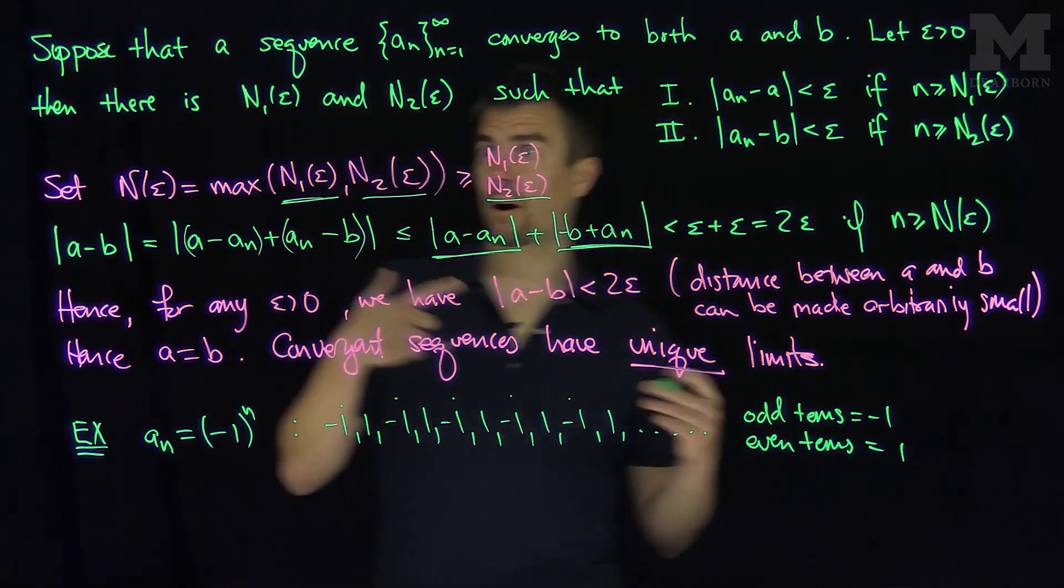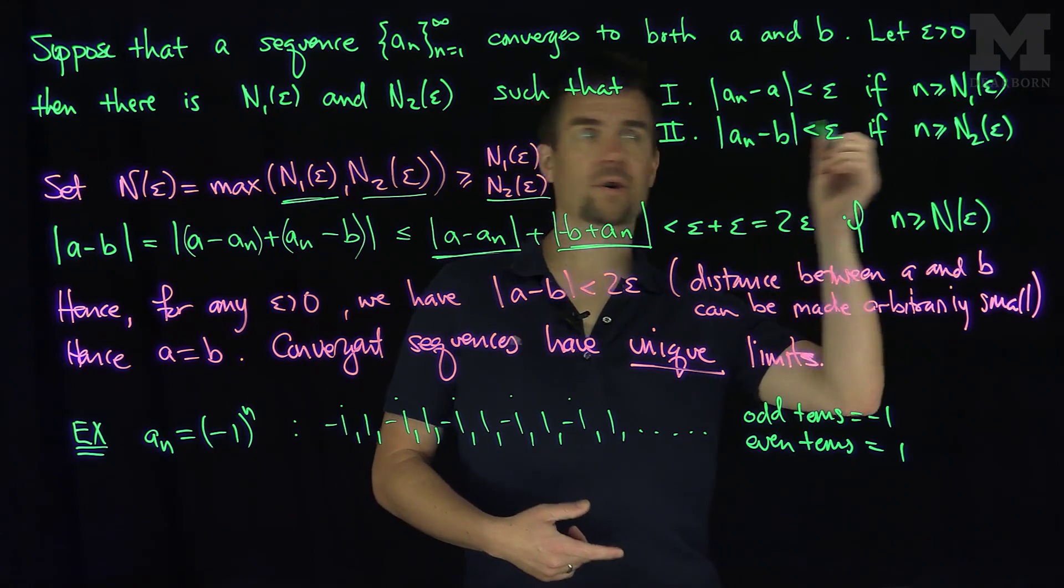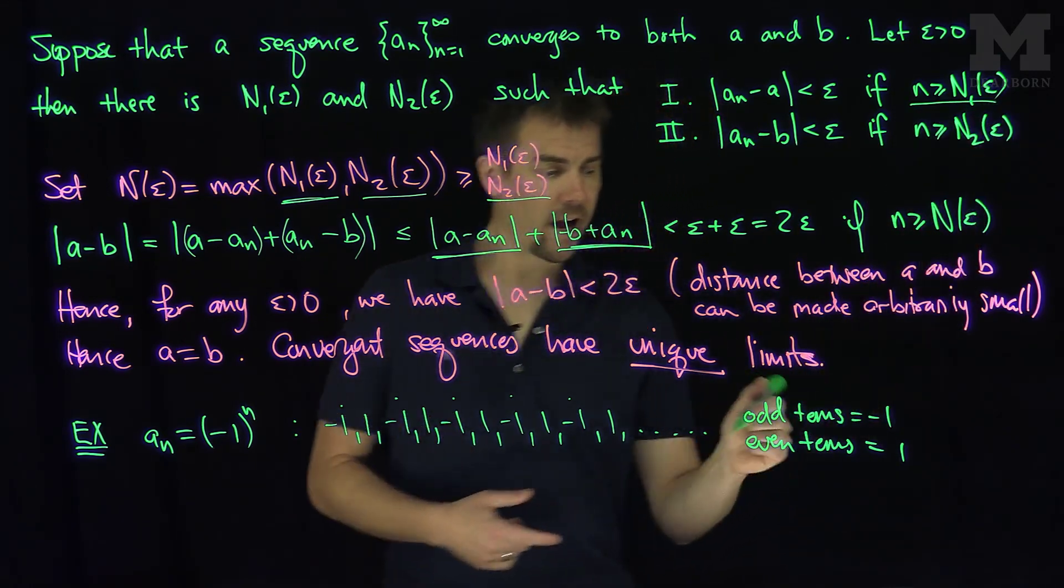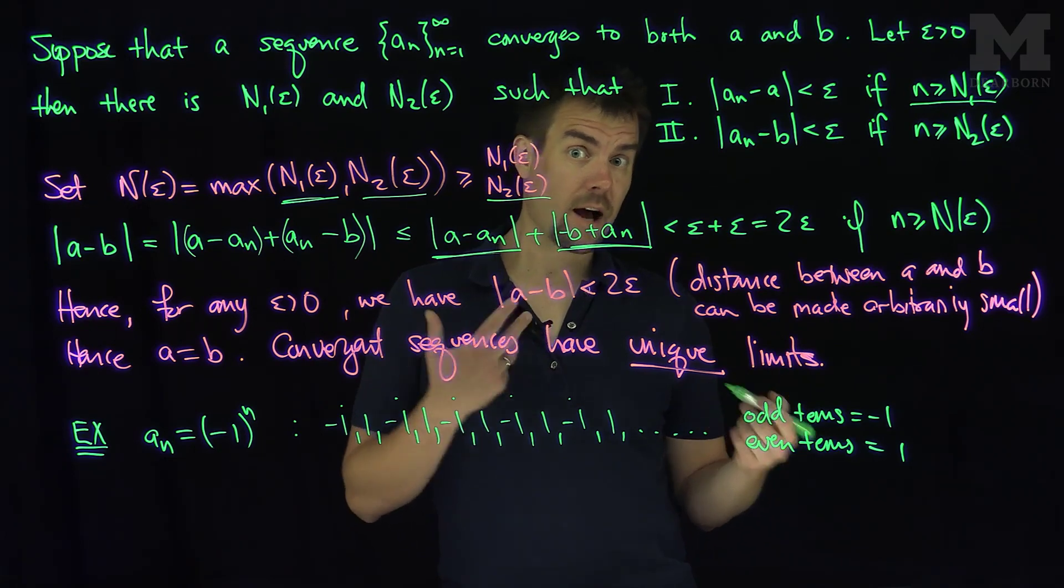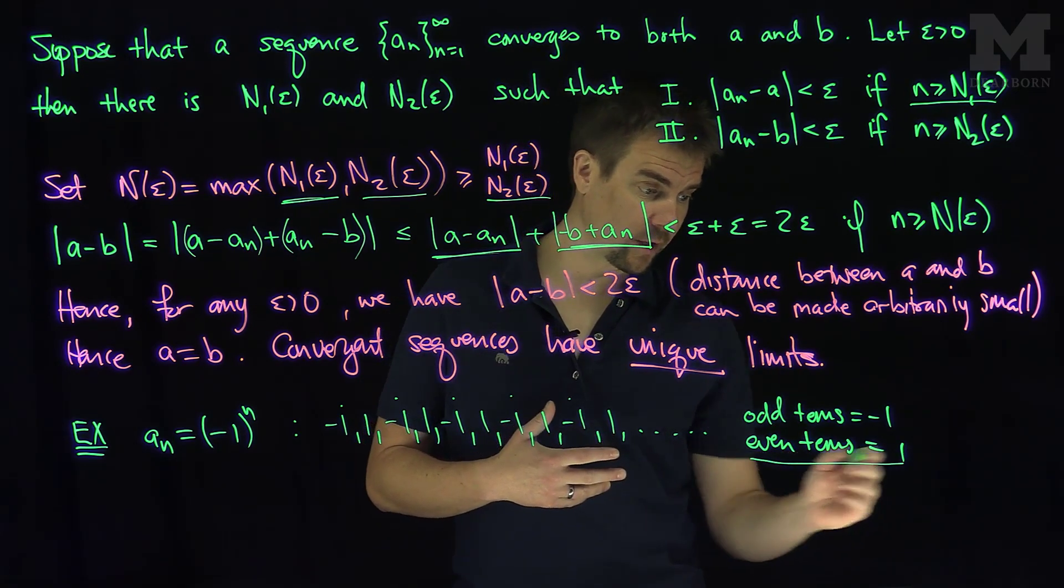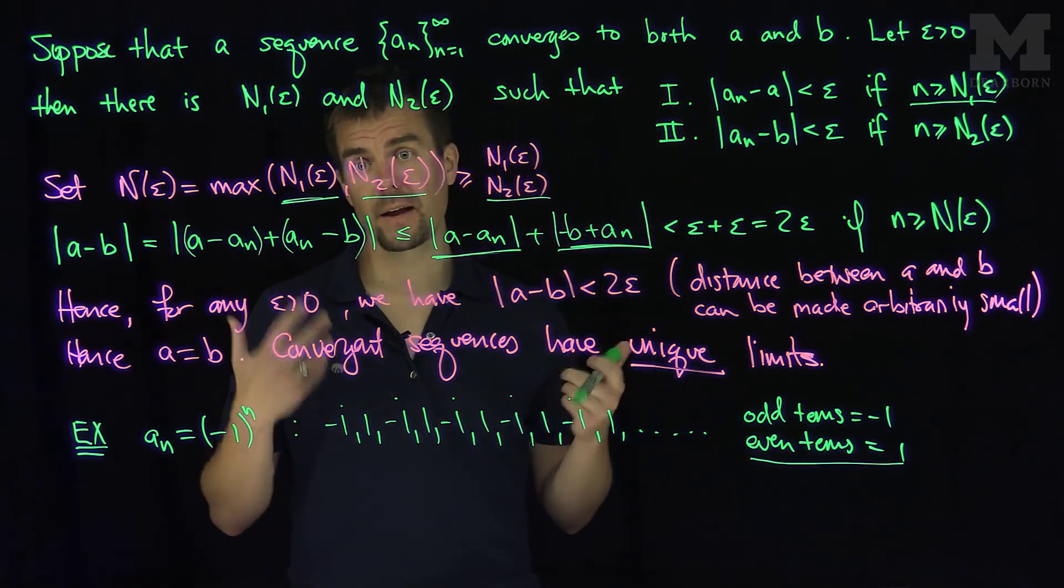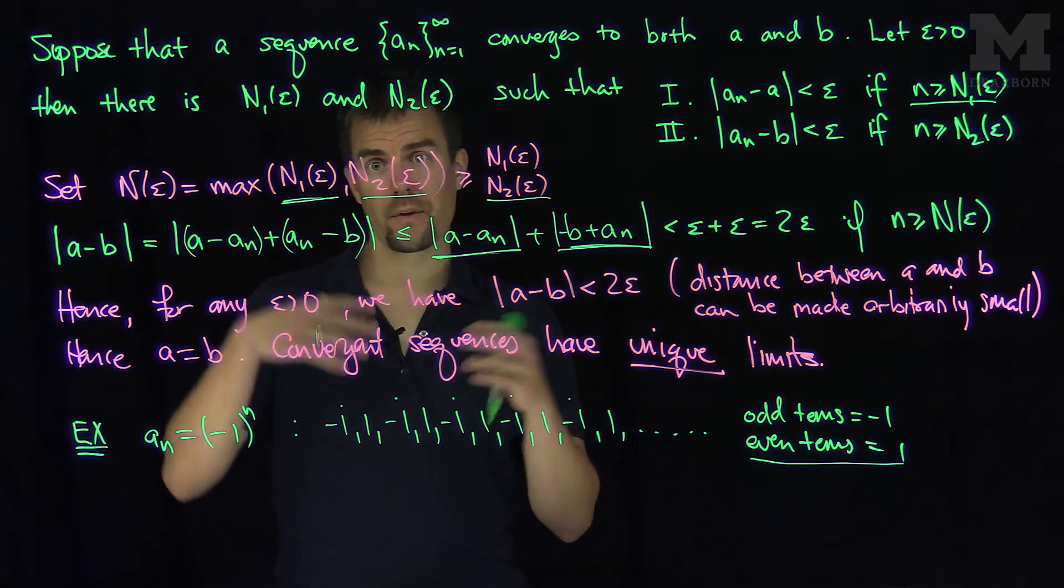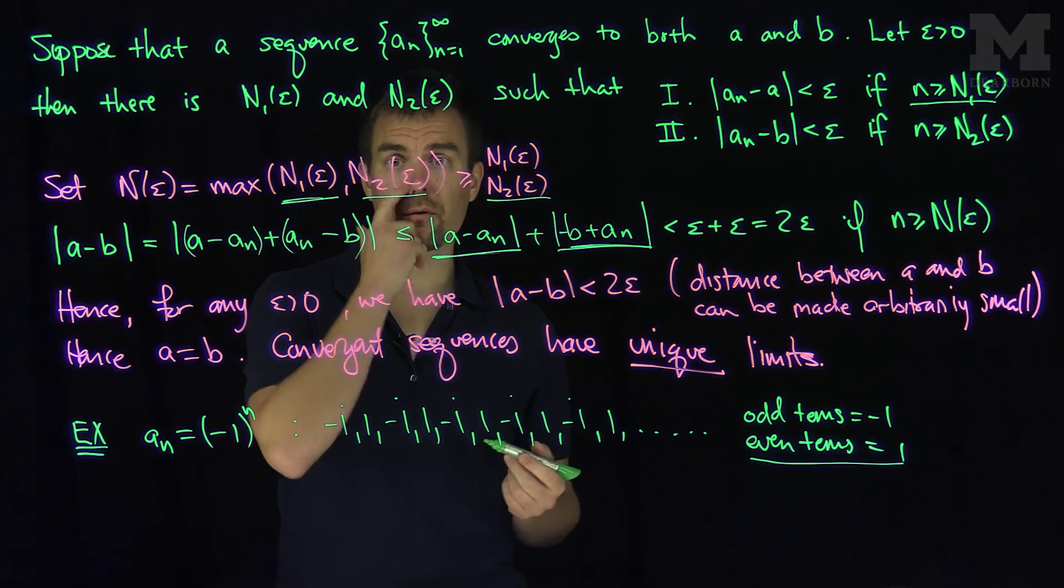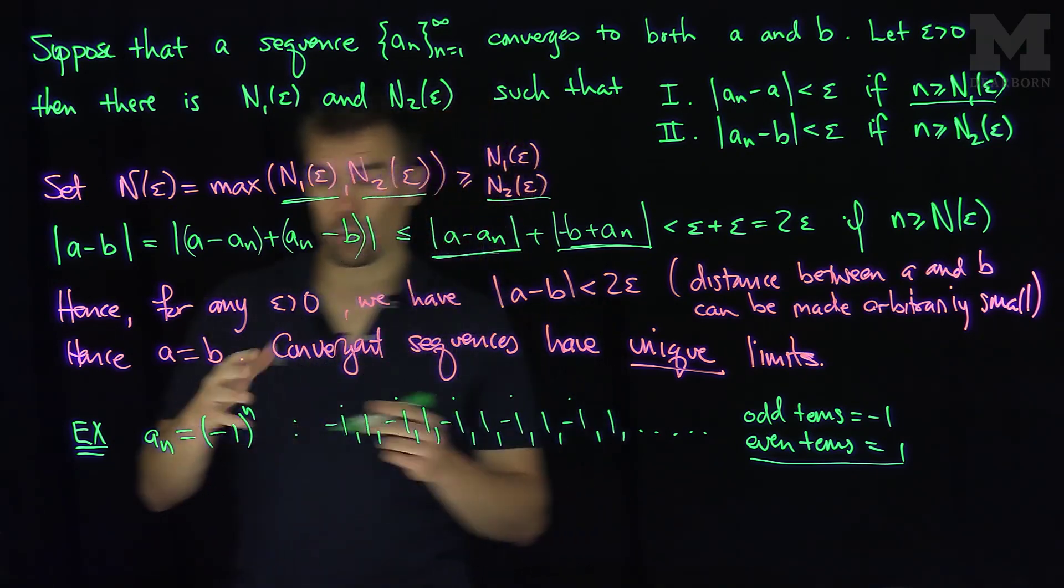So if this sequence was to converge, for arbitrarily large values of n, I know the sequence can be made close or identically equal to negative one. However, for also other arbitrarily large values of n, it can be made identically equal to one. So there's no way that I can interpolate between one and negative one. That's the rough idea. We can, of course, formally prove that. But this sequence over here will not converge.